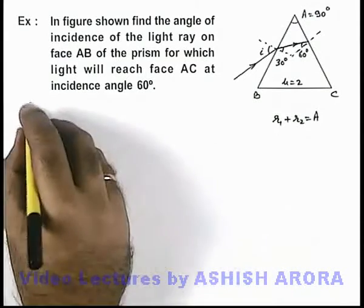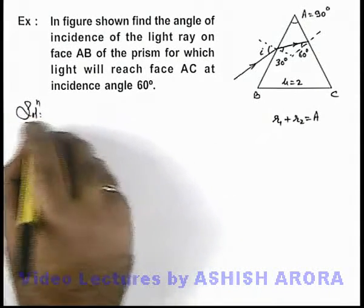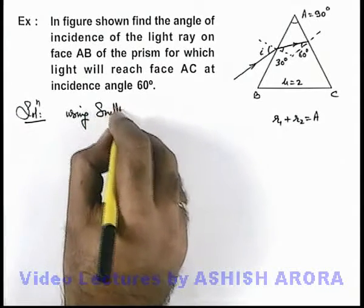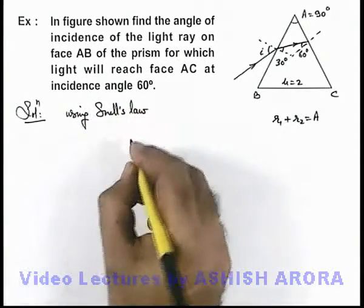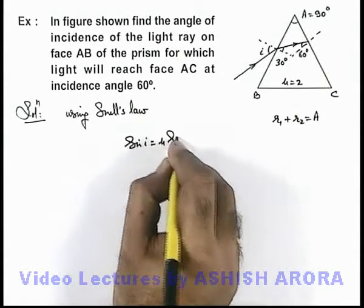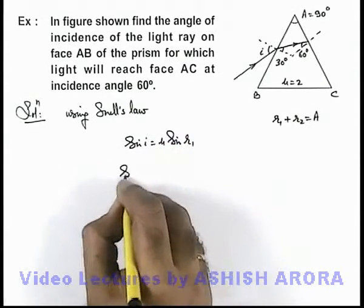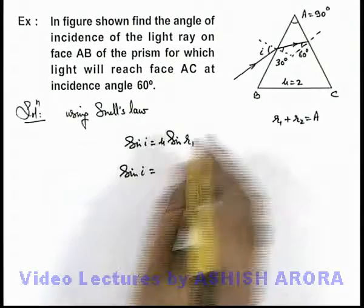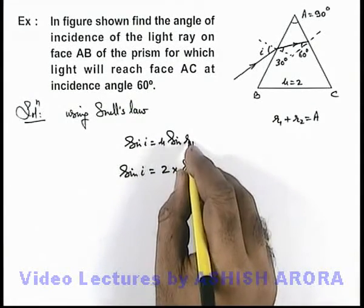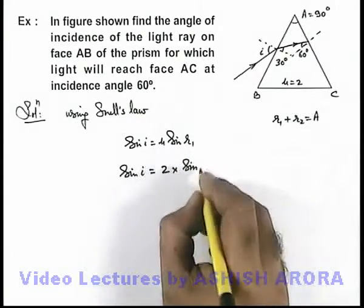So in this situation, we can write using Snell's law: sine i is equal to mu sine r1. In this situation, we can write sine i is equal to the value of mu, we are given as 2, multiplied by sine r1. The value of r1 here will be 30 degrees.